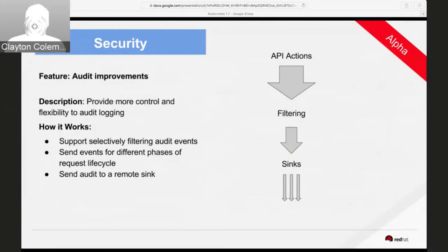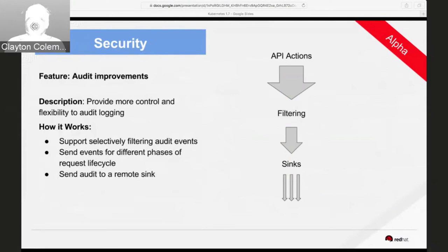That's just scratching the surface of security improvements in Kubernetes 1.7. Our overall arc for 1.8 and 1.9 is to continue offering better subdivision and better integration with external secret stores. There's a lot of work going on in Kubernetes SIG Auth — topics include container identity and giving pods and services unique certificates, providing a chain of attestation all the way back to the node that launched them.